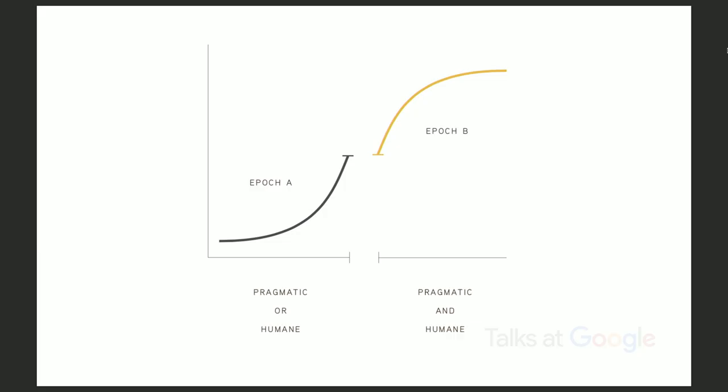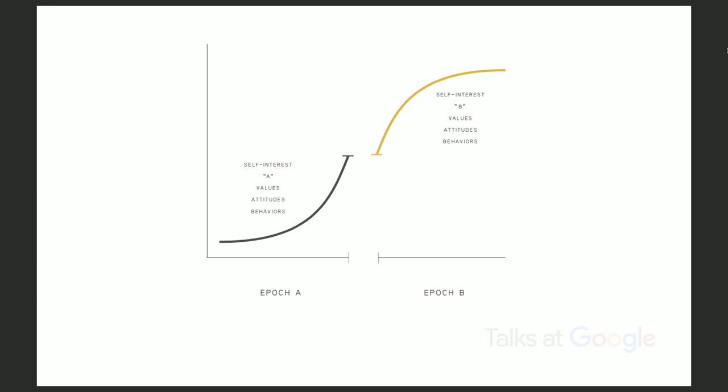So back to conflict. We as human beings are capable of both Epoch A and Epoch B behaviors. What comes out — what is manifest — depends on what the environment is and what's advantageous. In Epoch A, the Epoch A values predominate, and in Epoch B, the Epoch B values predominate.